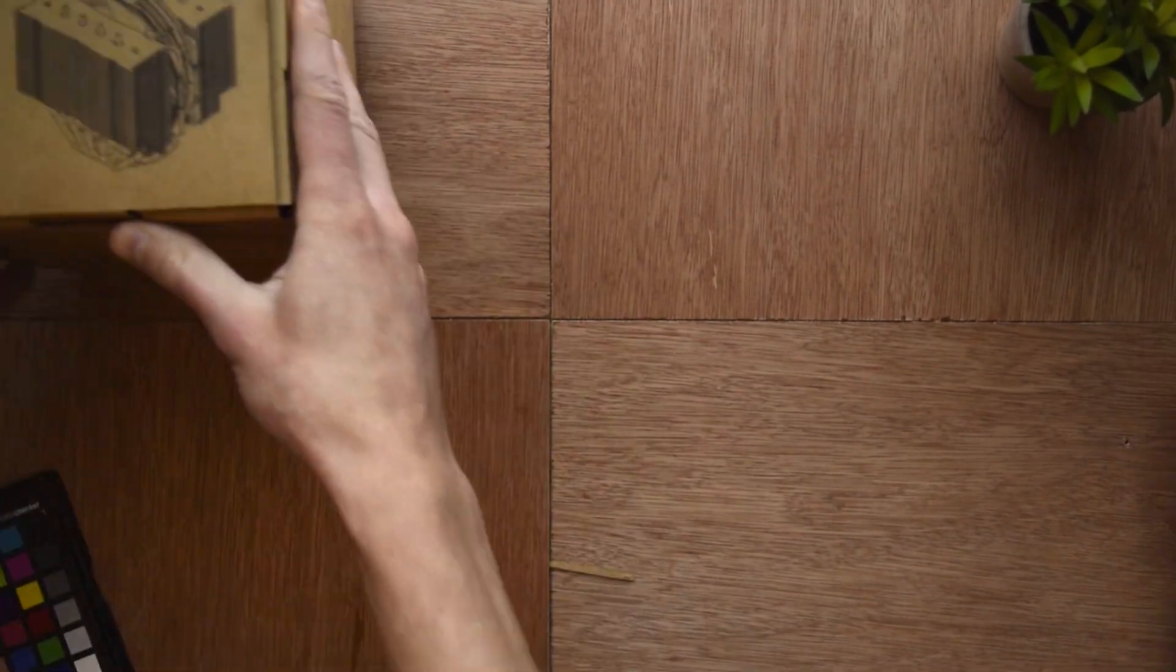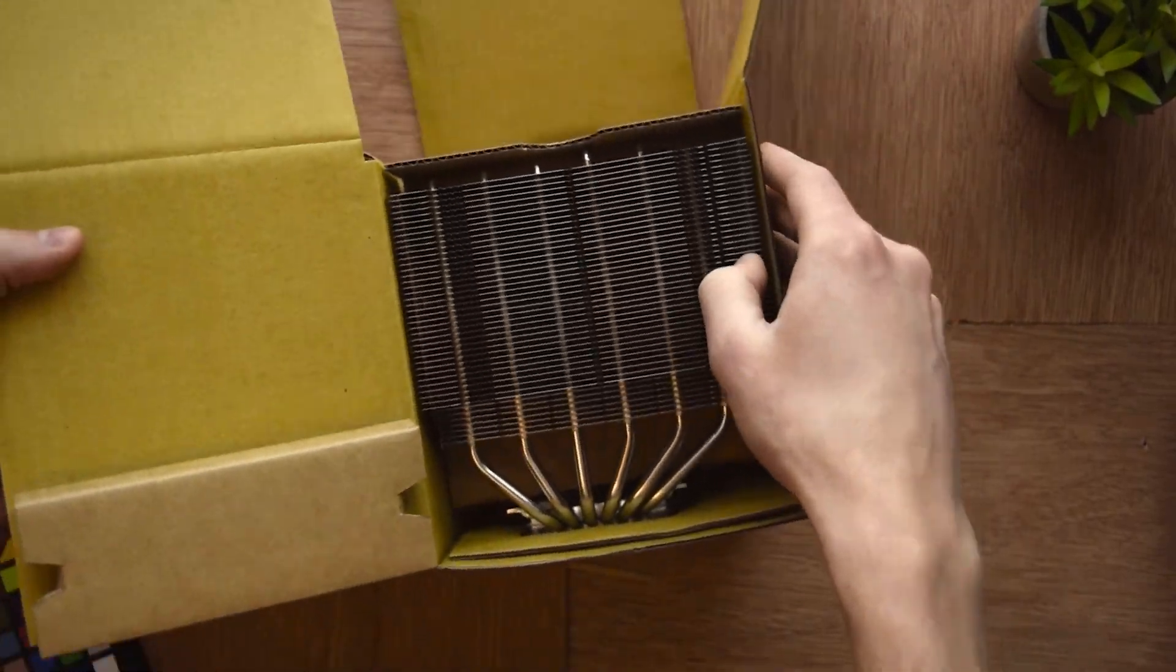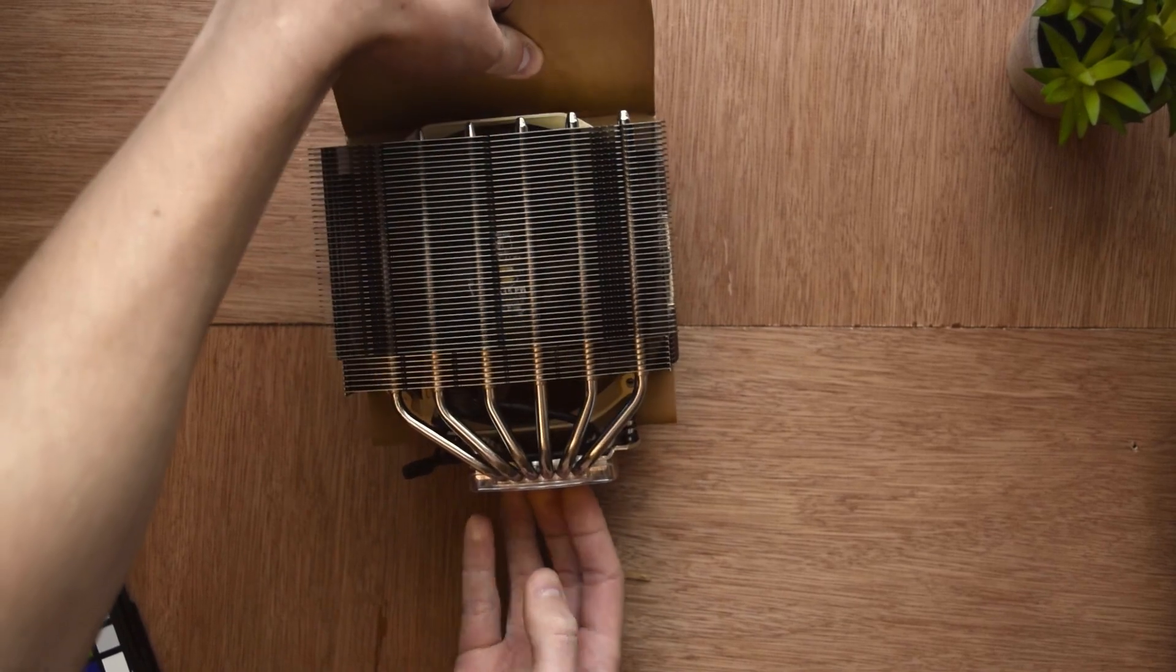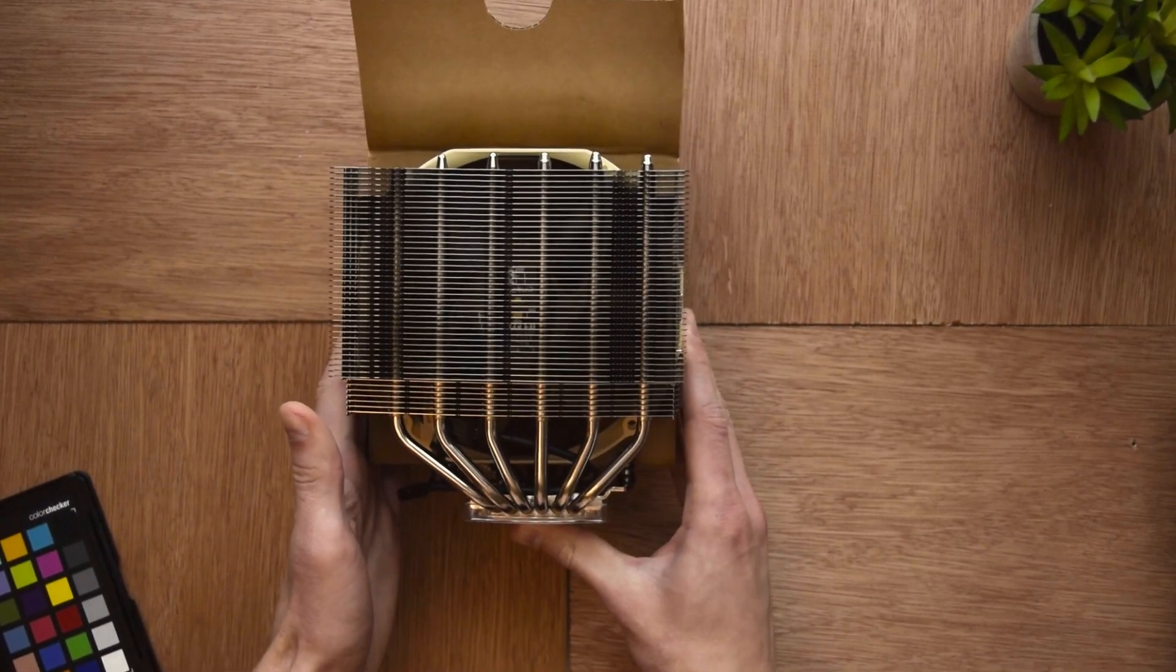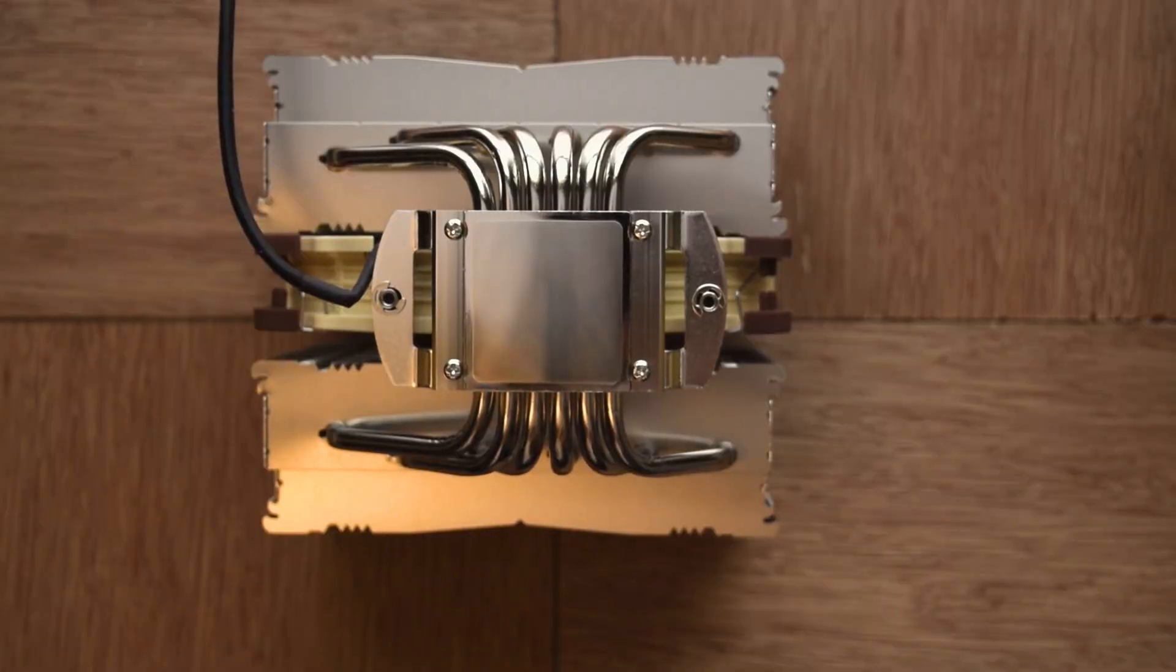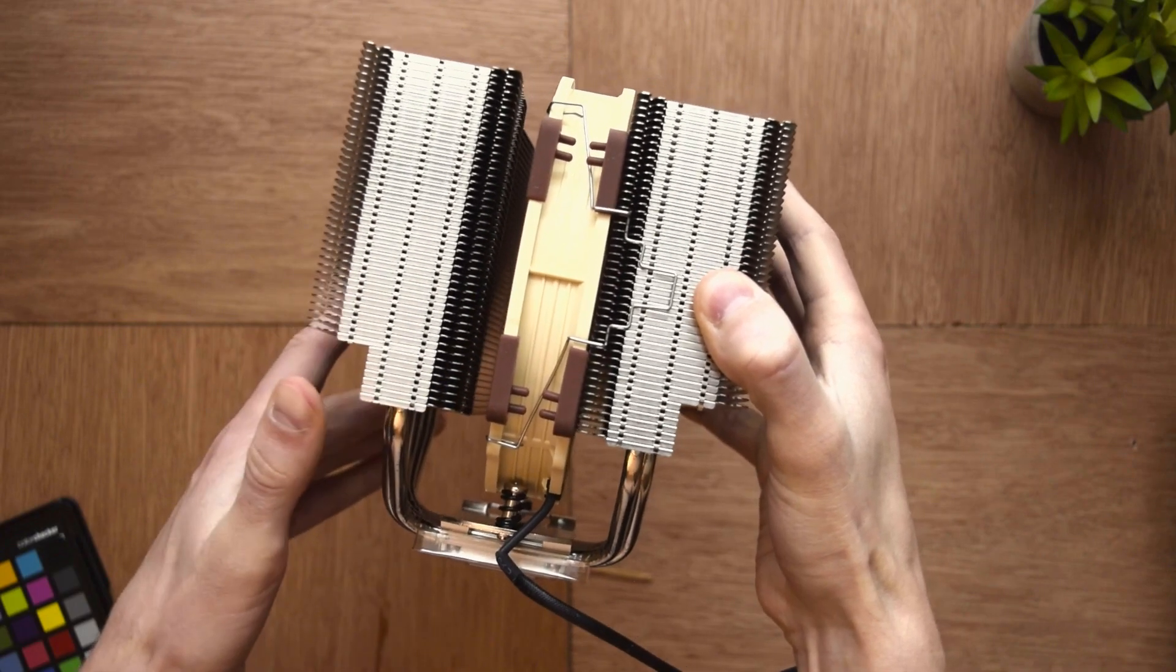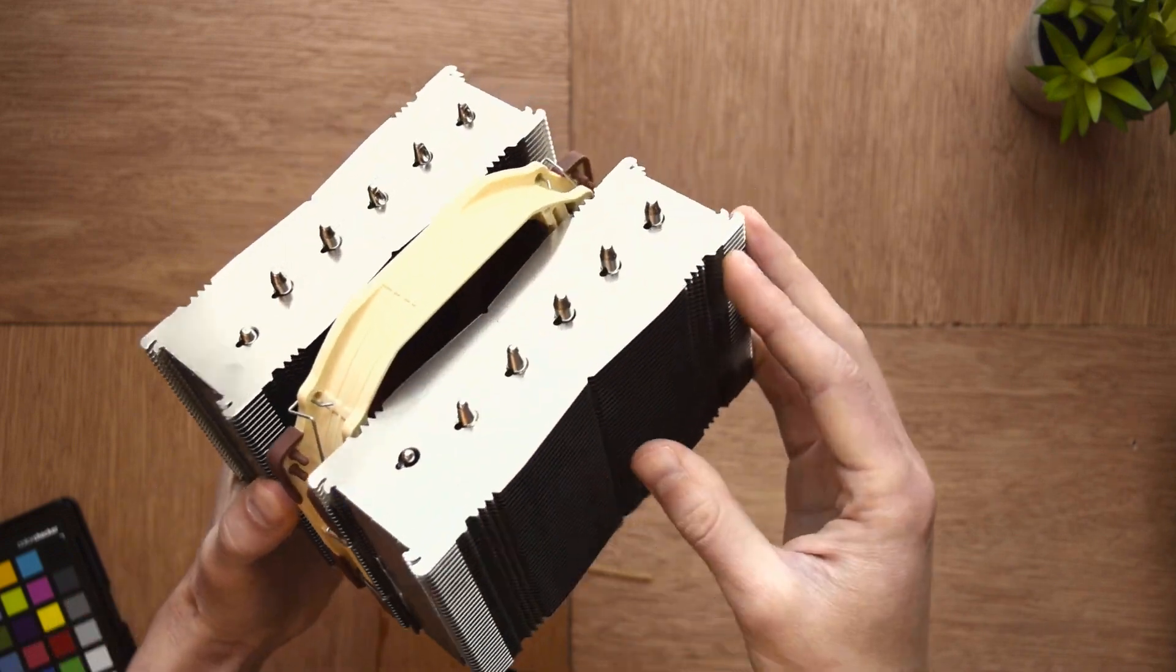Opening up the box that contains the cooler reveals an absolutely massive amount of metal. Like seriously, this thing is massive. I had mentioned compatibility earlier and now we get a look at another compatibility focused feature of this cooler. The heat pipes and fins are offset to one side to give that first PCIe slot some breathing room. With a cooler this big, I will take all the room I can get.